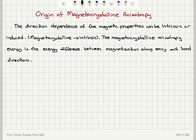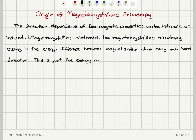It turns out that this energy is just the energy required to overcome the spin-orbit coupling. So the main source of magnetic anisotropy is spin-orbit coupling — this is simply the energy required to overcome spin-orbit coupling.